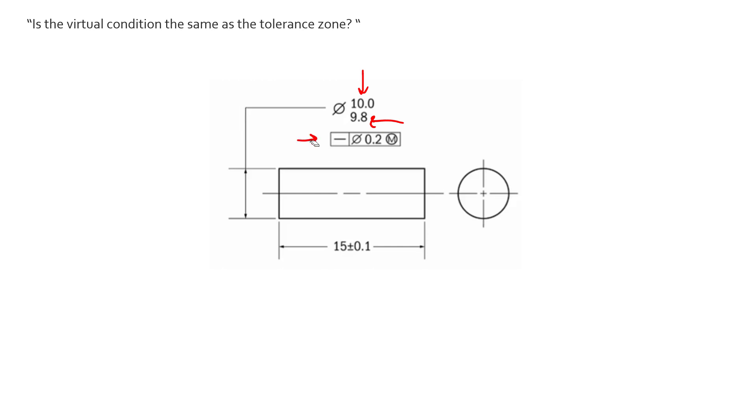We also have this feature control frame here controlling straightness. This feature control frame is attached to this size dimension, so we know we're controlling the derived median line of this cylinder. If we have the derived median line represented by this bowed red line here, our tolerance zone is sized with a diameter of 0.2. This derived median line has to fall inside that tolerance zone in order to pass this straightness spec.